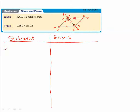The first statement is always your given: ABCD is a parallelogram. All those things I noted while marking the figure — congruent sides, parallel sides, parallel lines cut by a transversal allowing the alternate interior angles theorem — those are all part of my reasons for proving the two triangles are congruent.